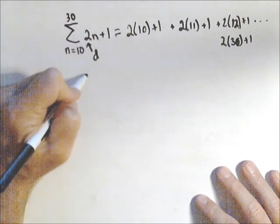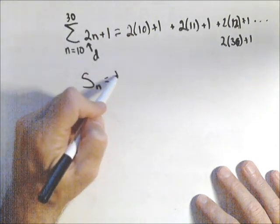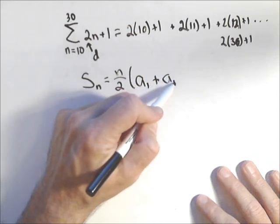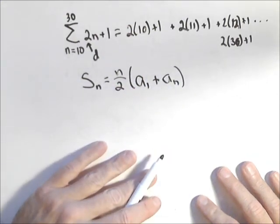Now the reason that's important: for a finite arithmetic series, the sum is n over 2 times the first term plus the last term. So I need my first term, my last term, and the number of terms.